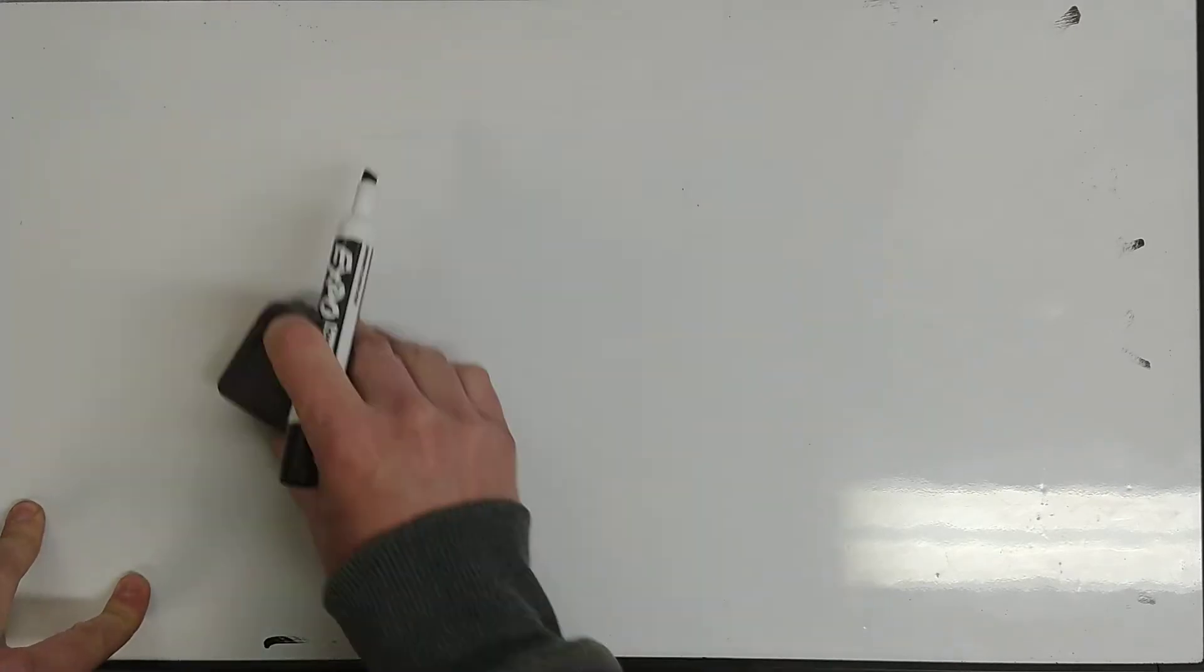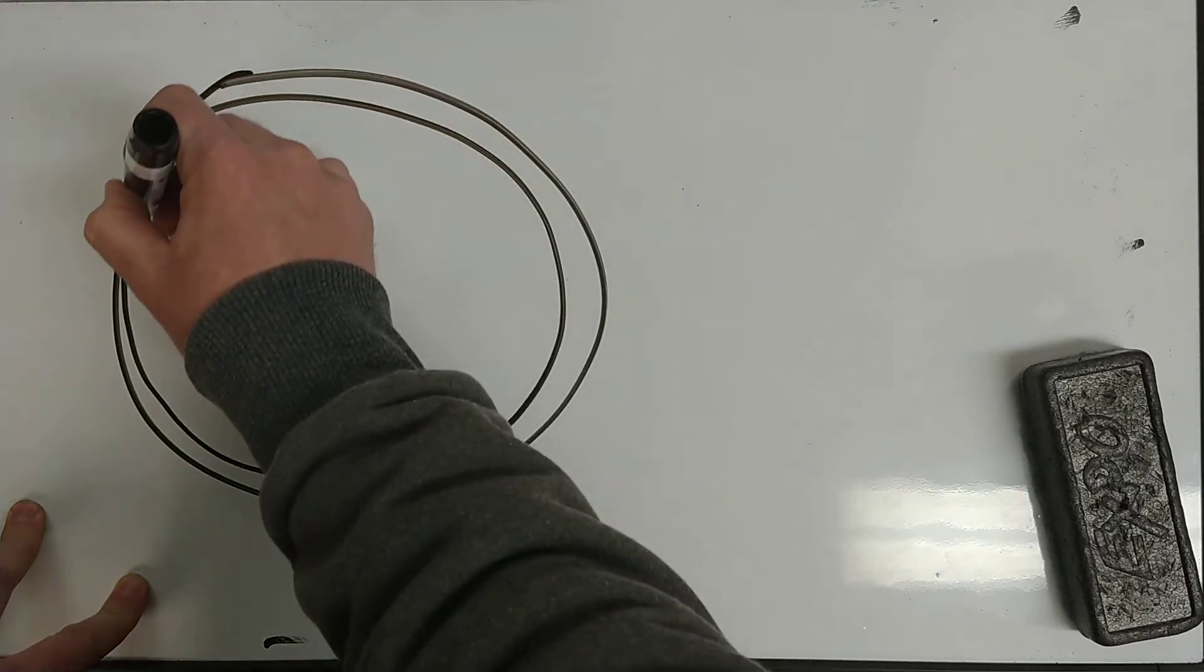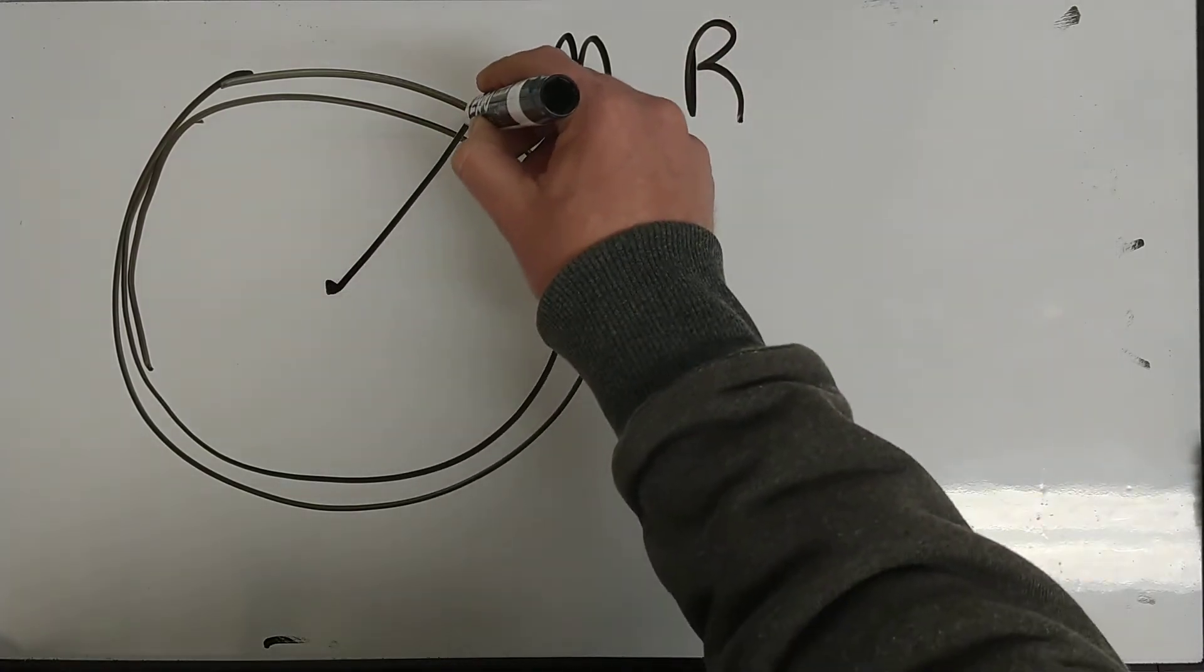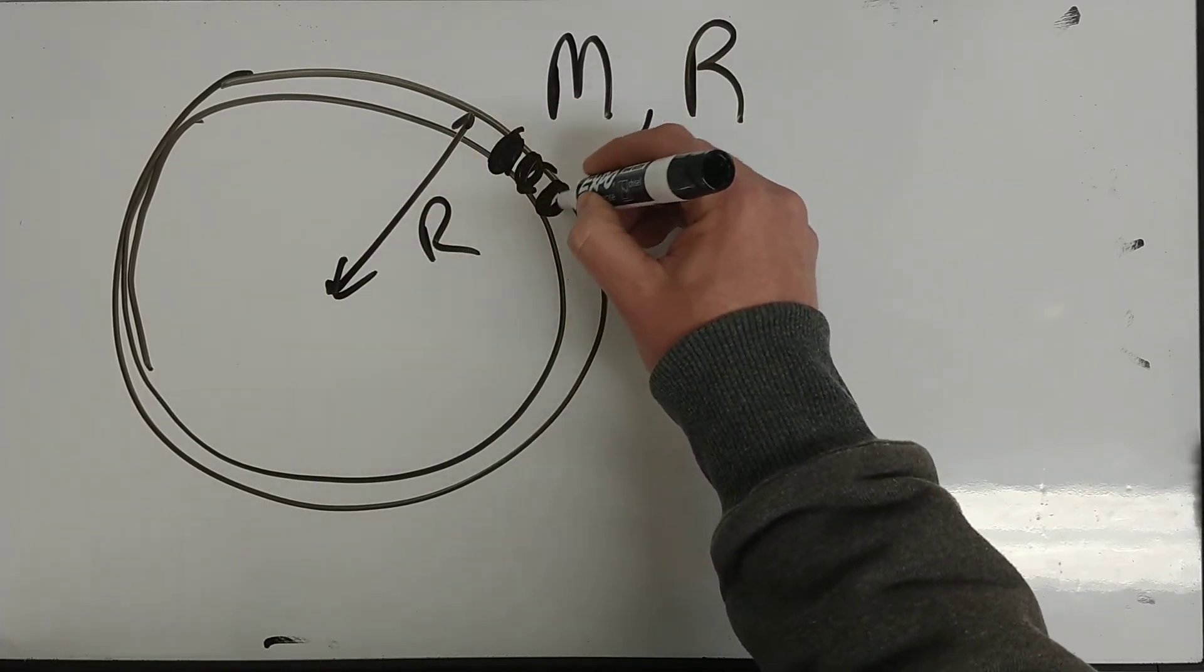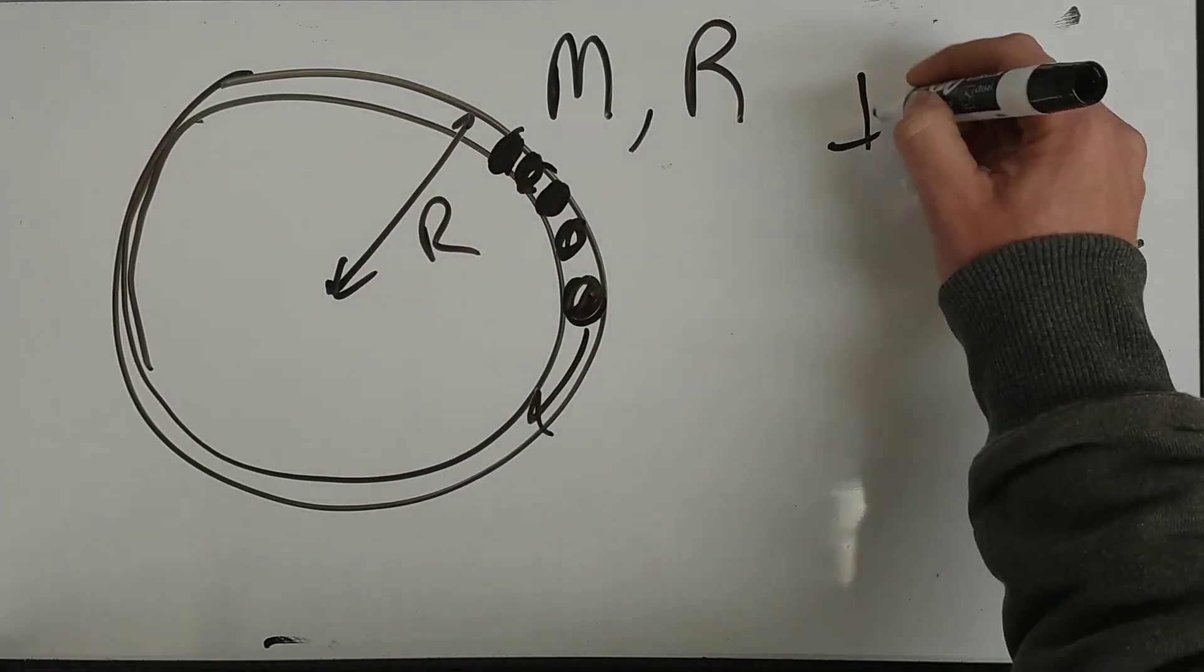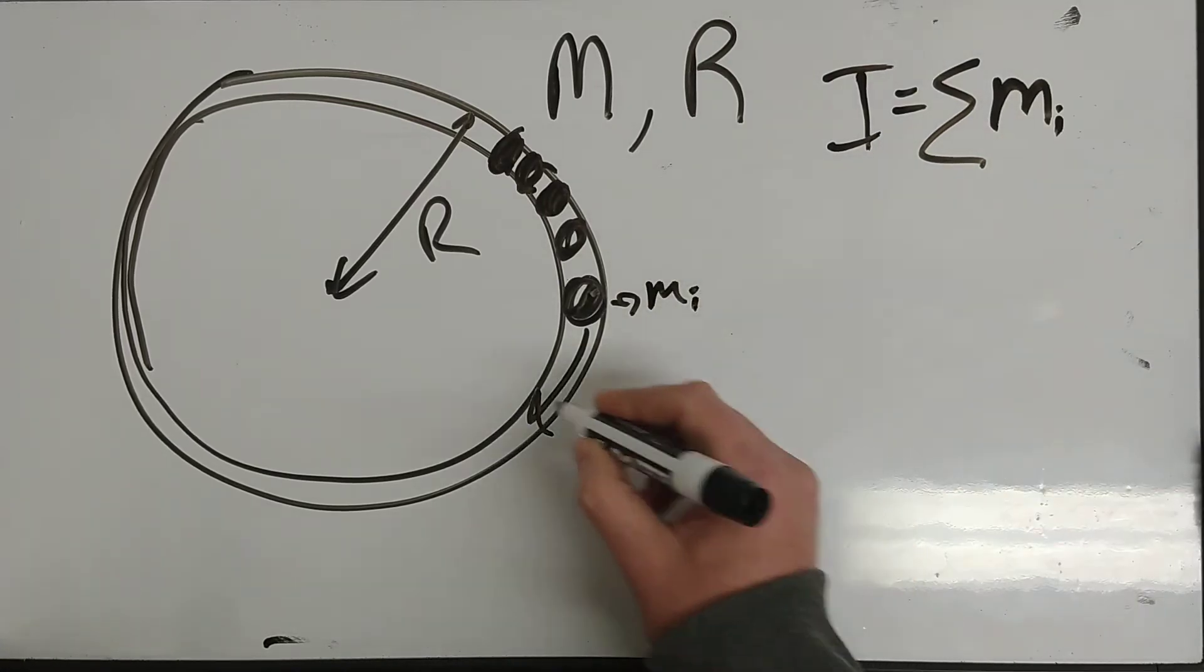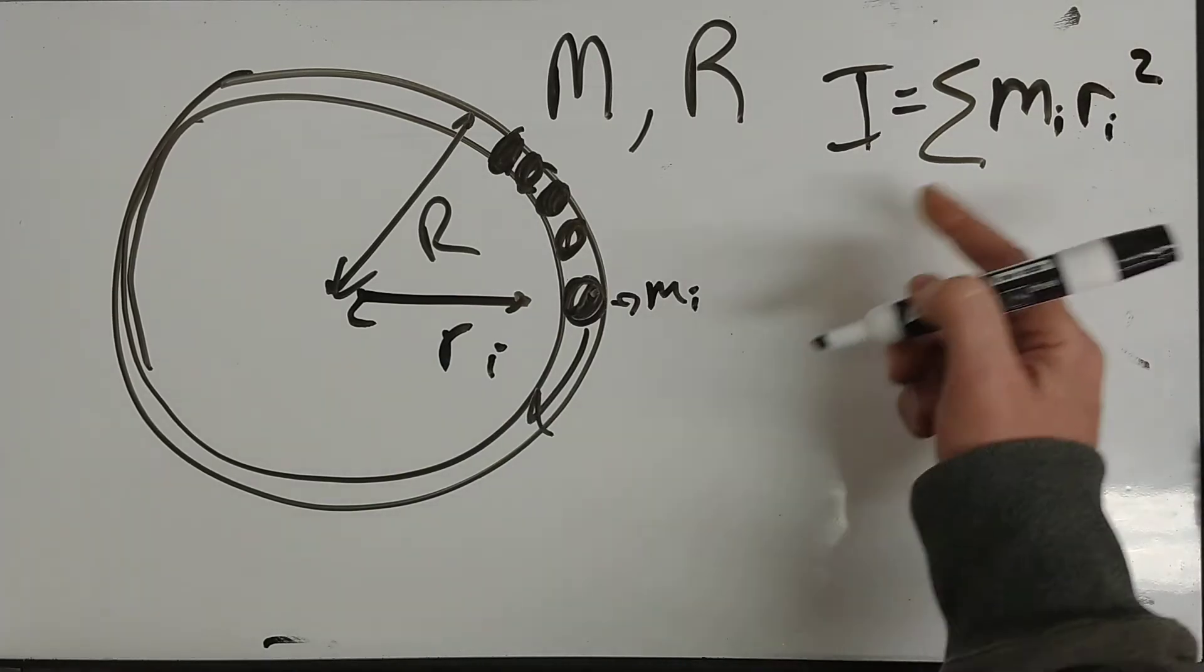Another rigid body is a hoop. A hoop is, a thin hoop is actually pretty easy to deal with, it's moment of inertia. Let's say the hoop has a mass and a radius, capital M, capital R, so it has a total mass and a total radius. Well, we could think about breaking this up into a bunch of little individual point masses, you know, I'm not going to draw all the way around here, but we could do that.